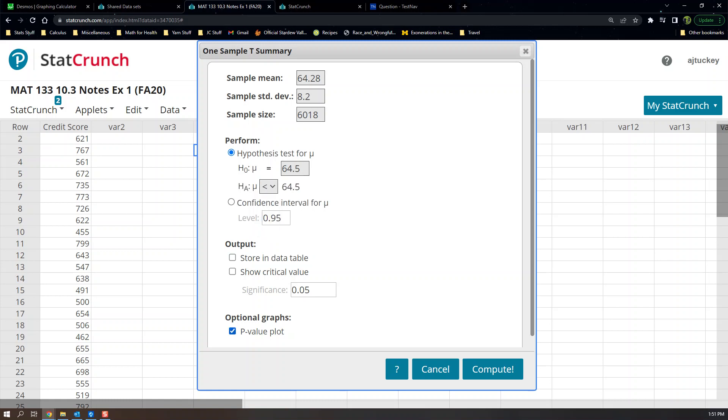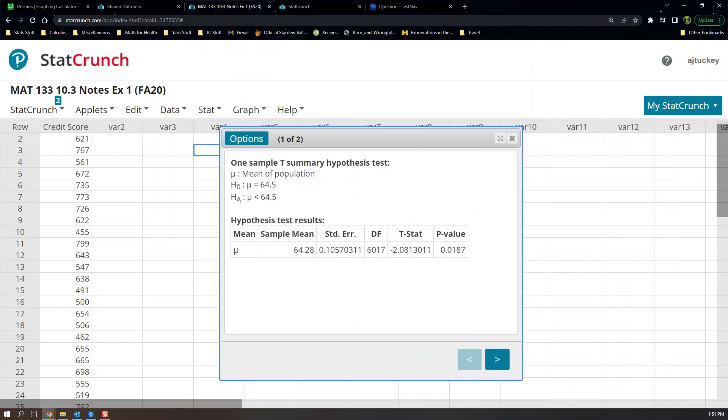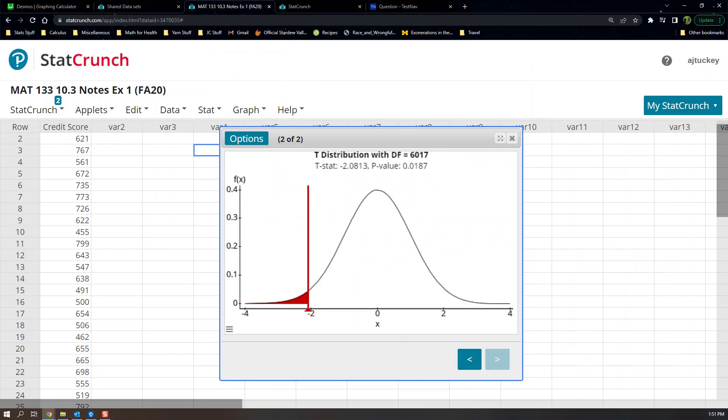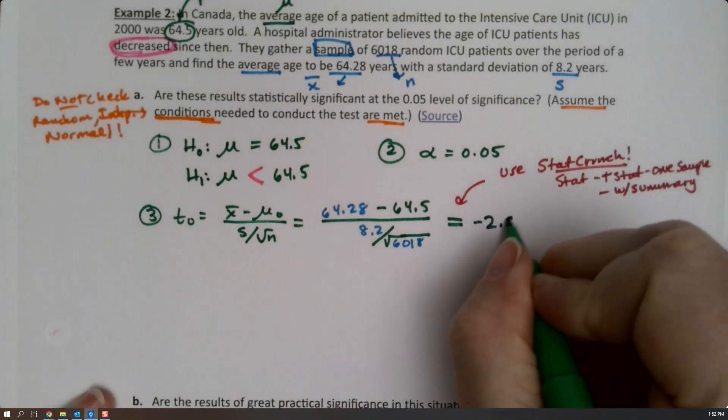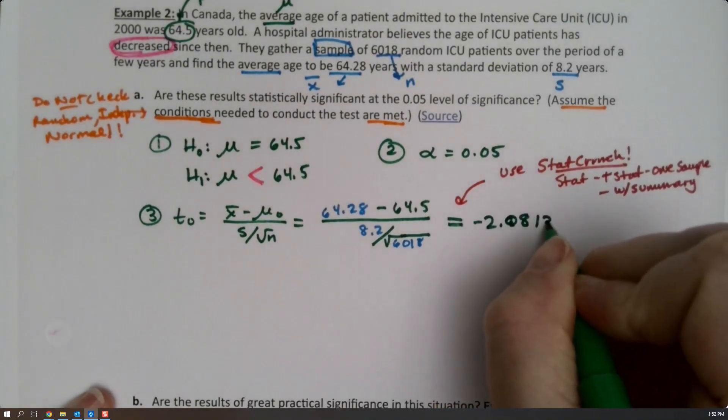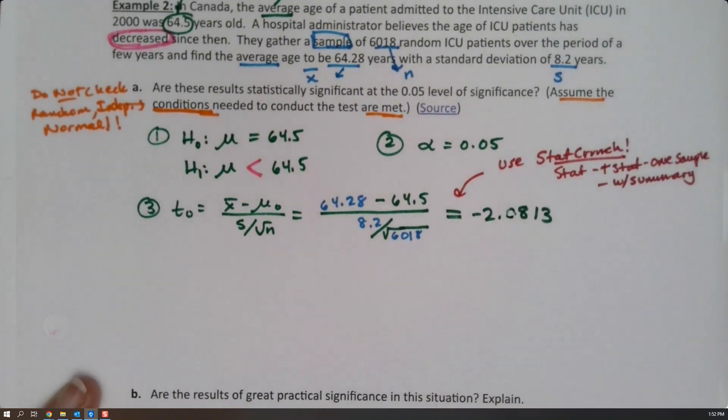Make sure you click your p-value plot down here because that'll get you your step four. You always want the p-value plot to be selected, and then say compute. There's your values right there. There's your t-stat, negative 2.08. But if you go to the graph, you can see it as well. The graph actually has everything you need. Negative 2.0813.